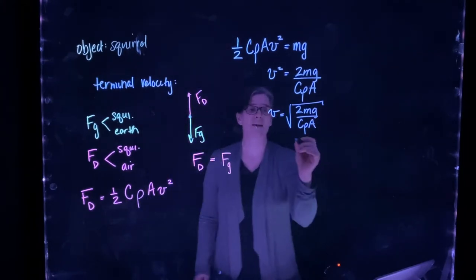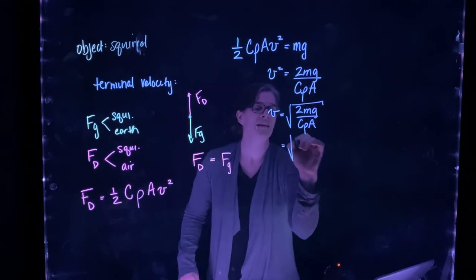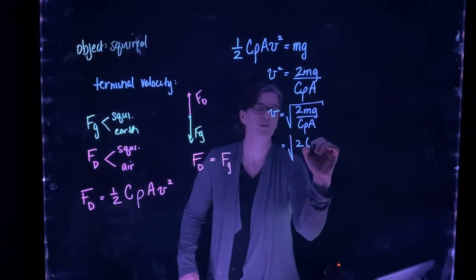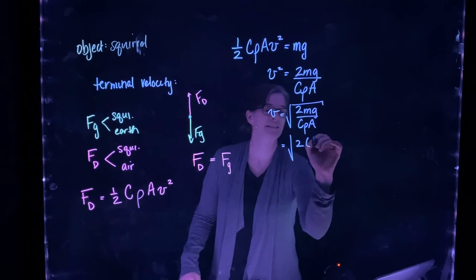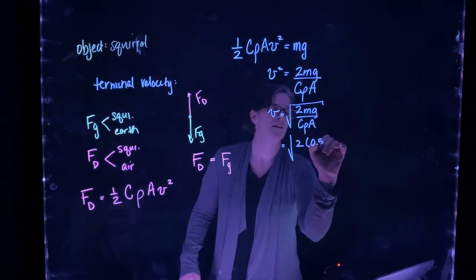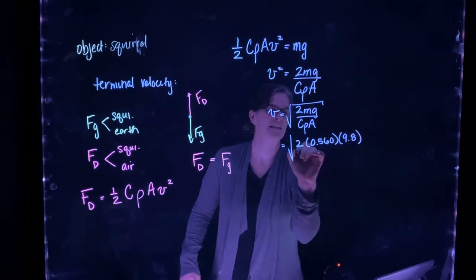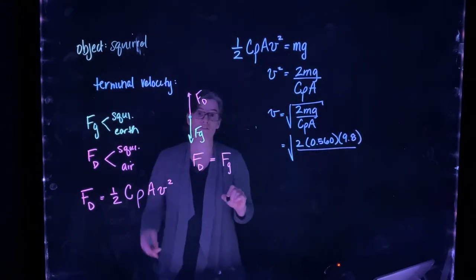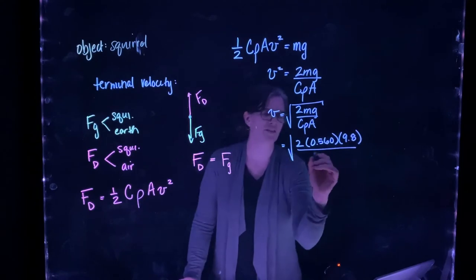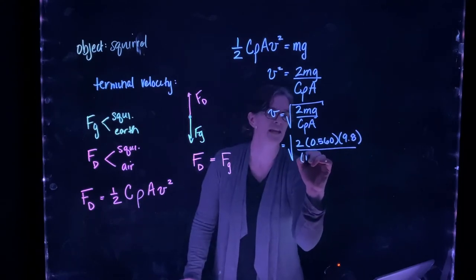So what are my values? The mass of the squirrel is 560 grams, so 0.056 kilograms. Gravity is 9.8. The drag coefficient for a horizontal skydiver is 1.